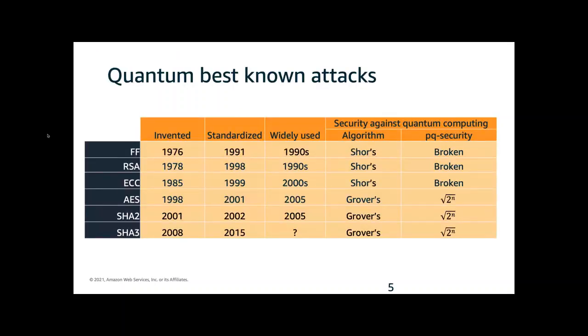One such capability we're aware of is quantum computing. Two quantum algorithms introduce new best known attacks against the classical crypto systems we use today. Shor's algorithm solves the discrete log and integer factorization, breaking finite field RSA and elliptic curve cryptography. Grover's algorithm can search an unsorted list of n terms in about the square root of time, reducing by a square root the security of symmetric schemes.